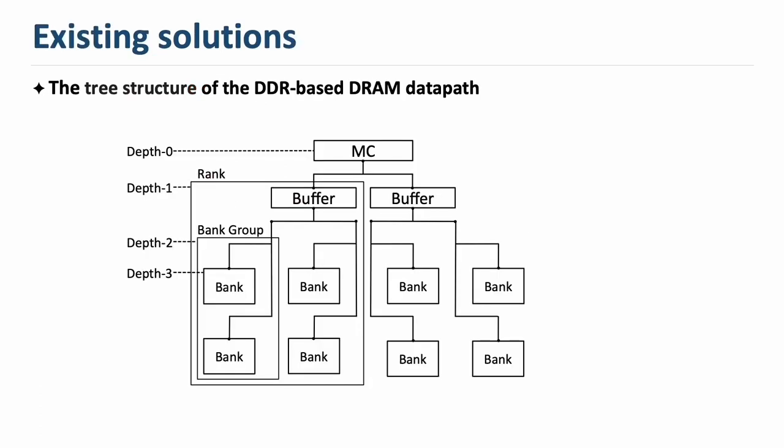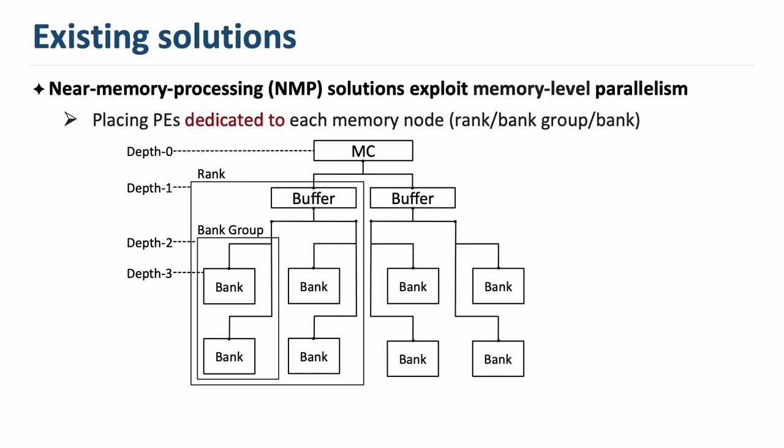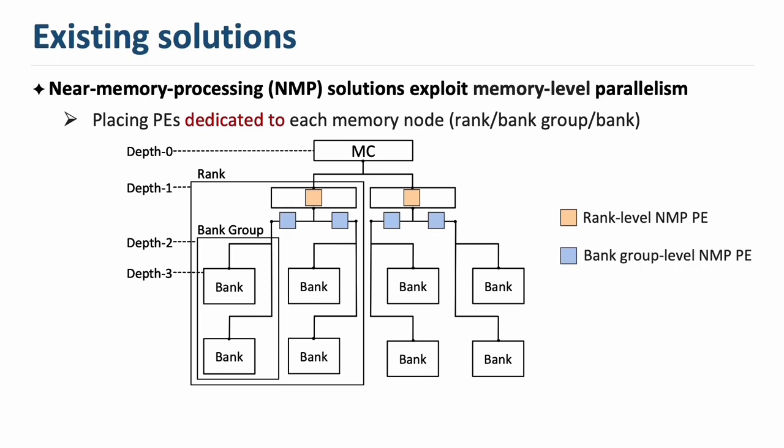As we can see, the modern memory data path is organized as a hierarchical structure. Existing near-memory processing solutions exploit memory-level parallelism by placing processing elements dedicated for each memory level — for example, one processing element dedicated for each rank to leverage rank-level parallelism, or similarly dedicated for each bank-group or bank to leverage bank-group-level or bank-level parallelism.